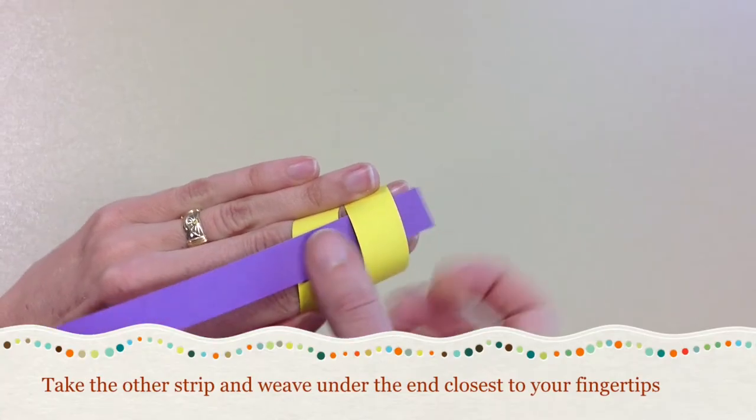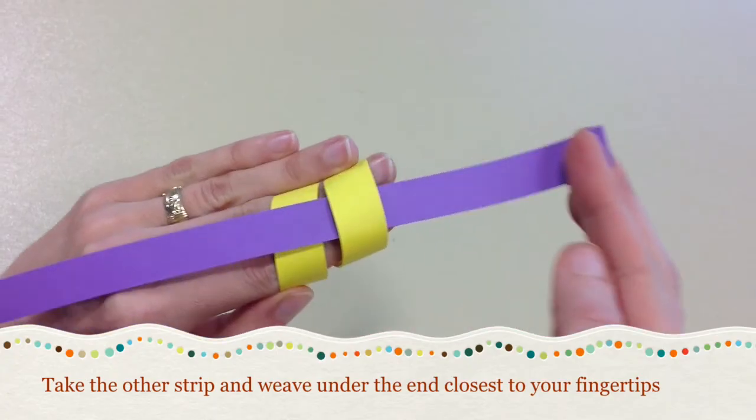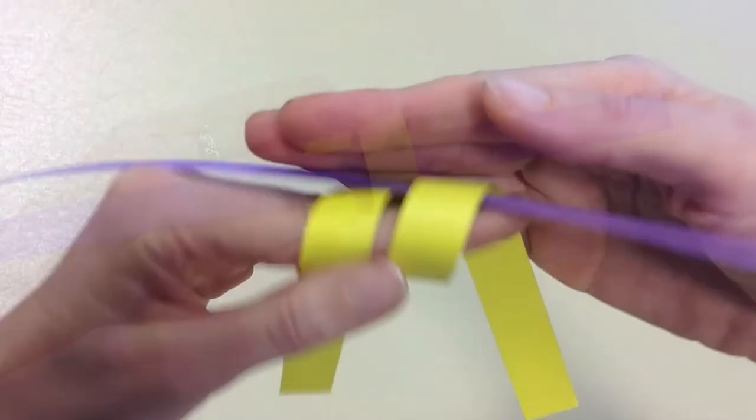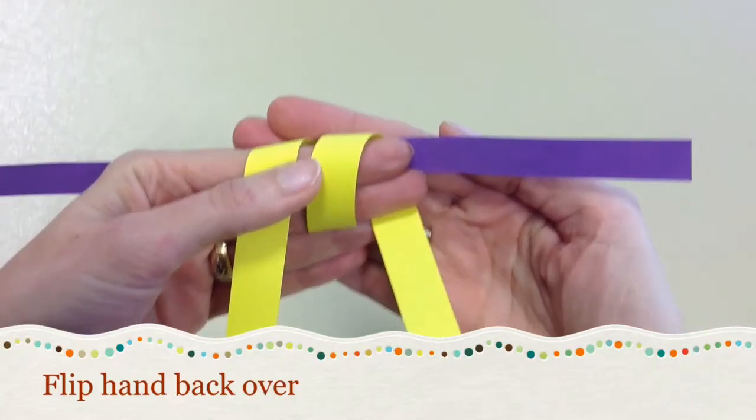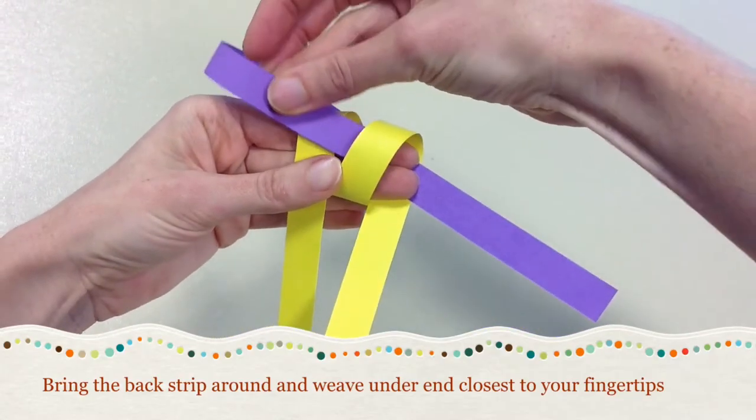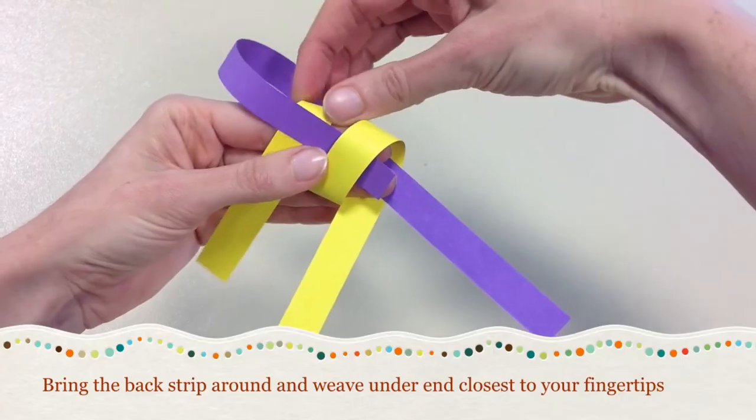Take the other strip and weave under the end closest to your fingertips. Flip hand back over. Bring the back strip around and weave under the end closest to your fingertips.